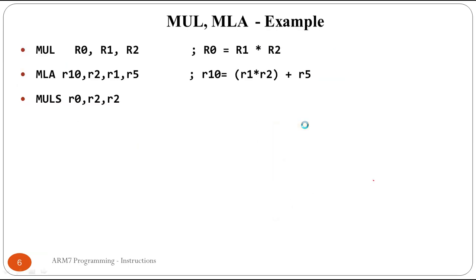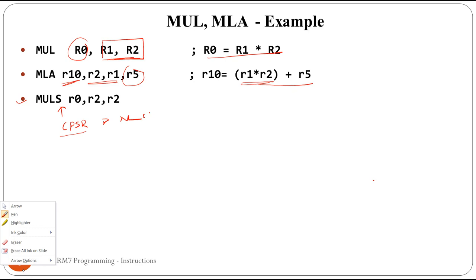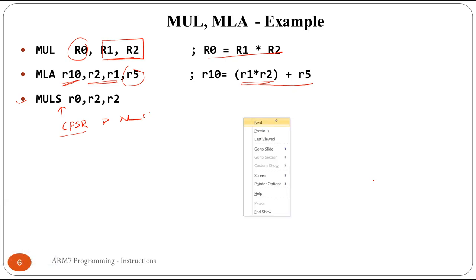Examples: MUL R0, R1, R2 - R1 and R2 are multiplied and the product is stored in R0. MLA R10, ..., R5 - the first two registers are multiplied, then R5 is added, and the result is stored in R10. MULS - if S is appended, the CPSR flag register bits NZCV are updated. These are a few examples related to the multiplication instructions MUL and MLA.